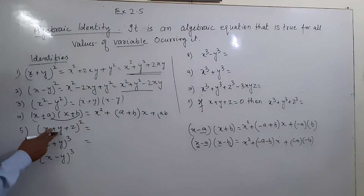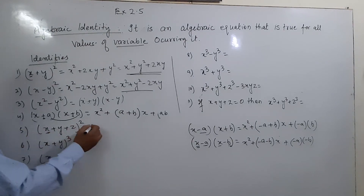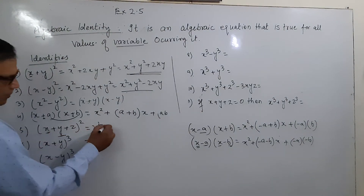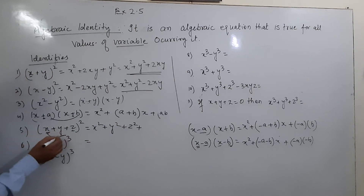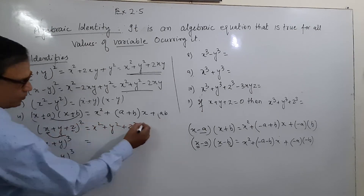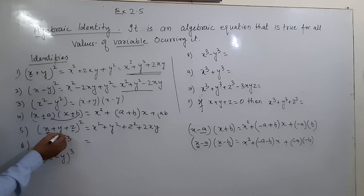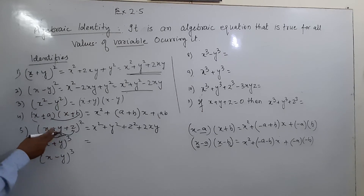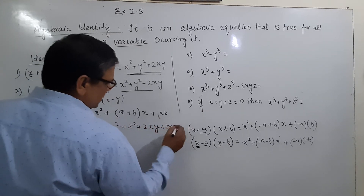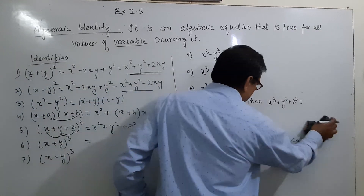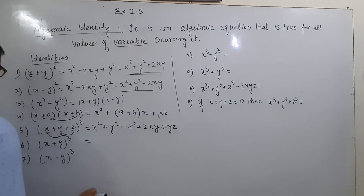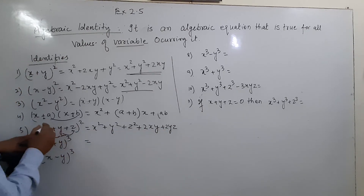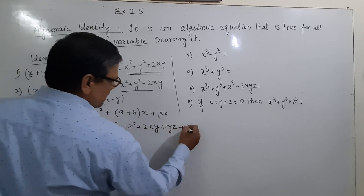Now for three variables: (x+y+z)² equals x² + y² + z² plus twice the products of each pair. So we write x², y², z², then add 2xy, then 2yz, and then 2xz. The formula is: (x+y+z)² = x² + y² + z² + 2xy + 2yz + 2xz.